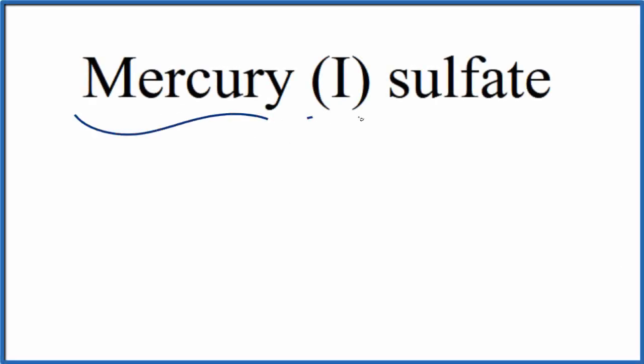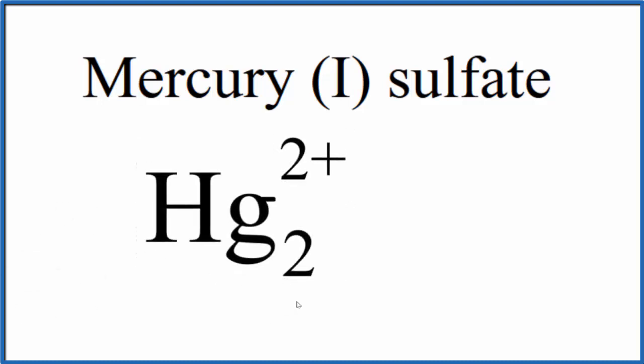To write the formula for mercury(I) sulfate, the first thing we need to realize is that mercury(I) is a special case. When we have mercury(I), it's always going to look like this: Hg₂²⁺. You can think about it as a polyatomic ion.